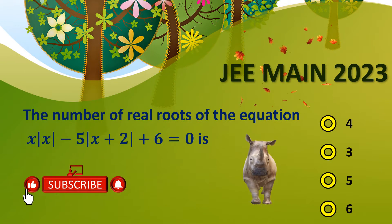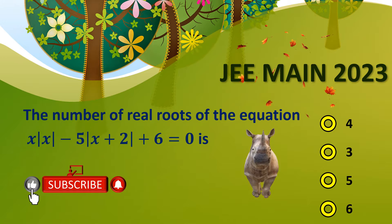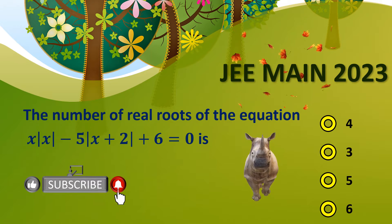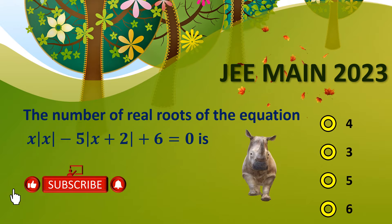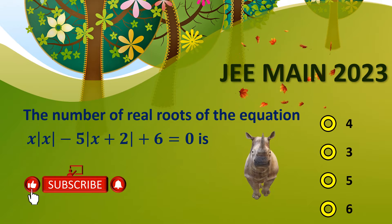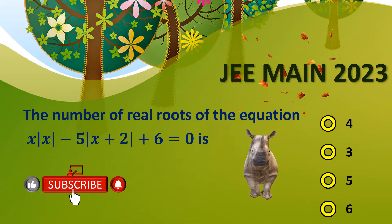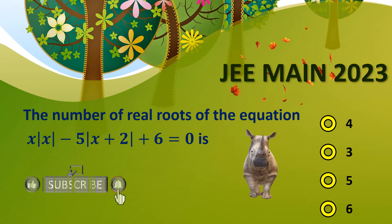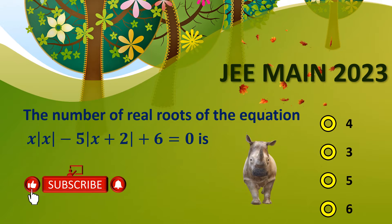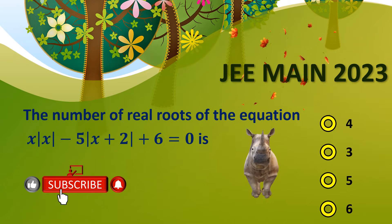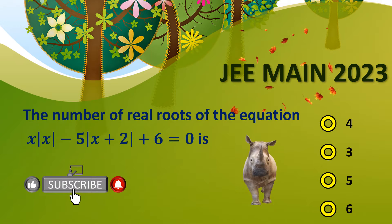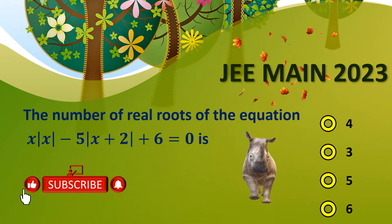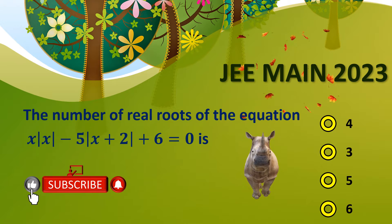In this video we're going to solve a problem which appeared in JEE Main 2023, from the theory of equations. We need to analyze the equation |x| · |x - 5| · |x + 2| + 6 = 0 and find out the number of real roots for this particular equation.